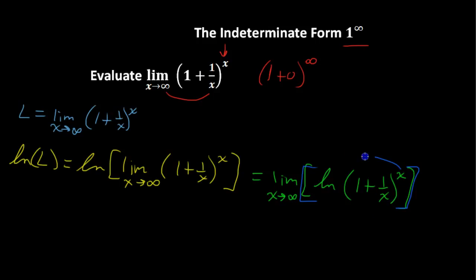And so we can take this x and move it out front. This is a property of logarithms. So the logarithm of something to an exponent means that you can take that exponent and move it out front, make it a product: x times the natural log of 1 plus 1 over x. At this point, I will rewrite this product as a quotient.